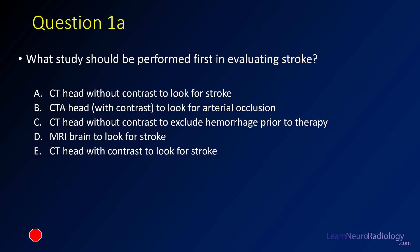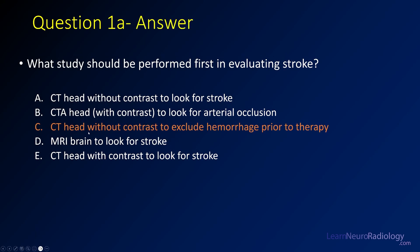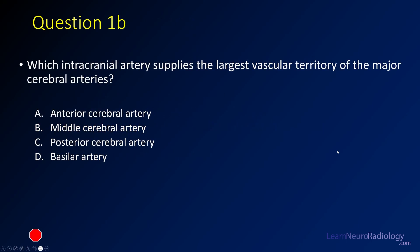We have a couple of questions. First: what should be your first study when evaluating a stroke patient? The answer is a CT head without contrast, done to exclude hemorrhage prior to therapy — you're going to give thrombolytics, so you need to rule out underlying hemorrhage. Second question: what intracranial artery supplies the largest vascular territory of the major cerebral arteries? From this case, it's the middle cerebral artery — the largest area of vascular perfusion in the cerebral hemispheres. An ICA and MCA occlusion is therefore the most problematic.